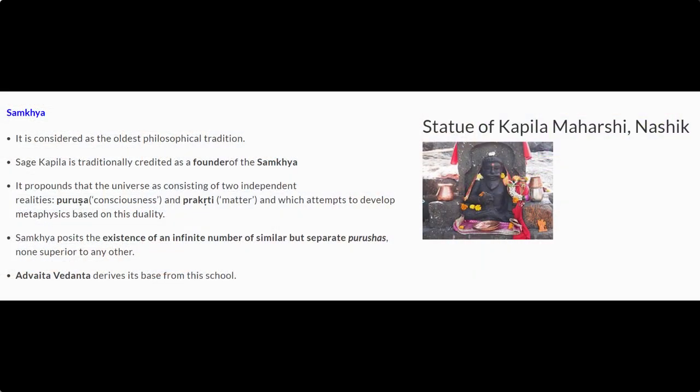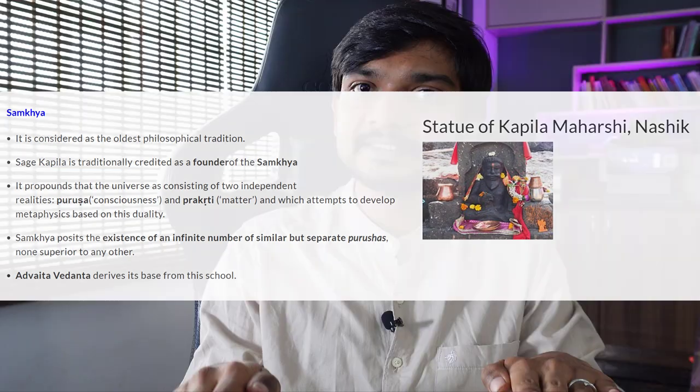The Sankhya philosophy was postulated by Kapilamuni, whom Swami Vivekananda called the first philosopher of the world. Sankhya looks at the universe in two distinct aspects: one is Purusha, which is consciousness, and second is Prakruti, which is matter, mind, body, and physical reality. Sankhya tells us that both these realities are true and exist parallelly, and that we need to realize ourselves as consciousness in order to come out of suffering.